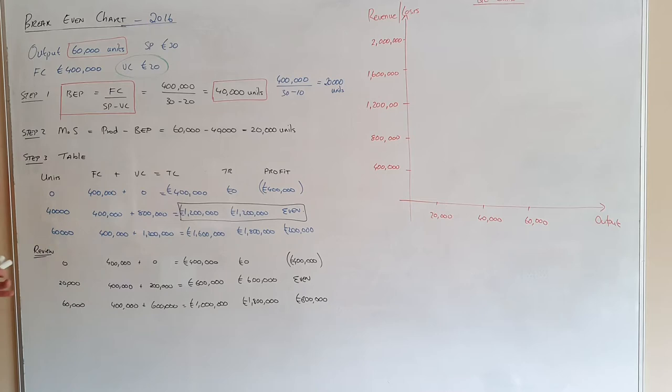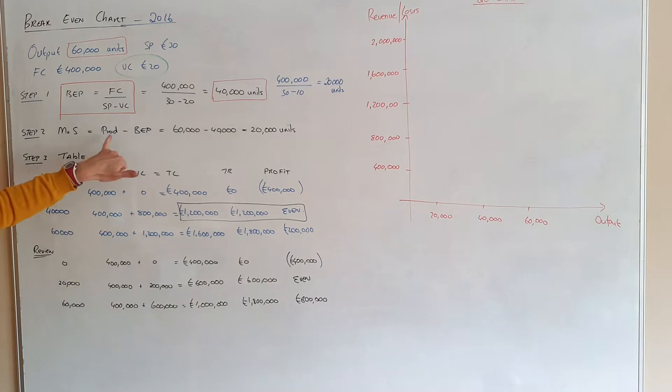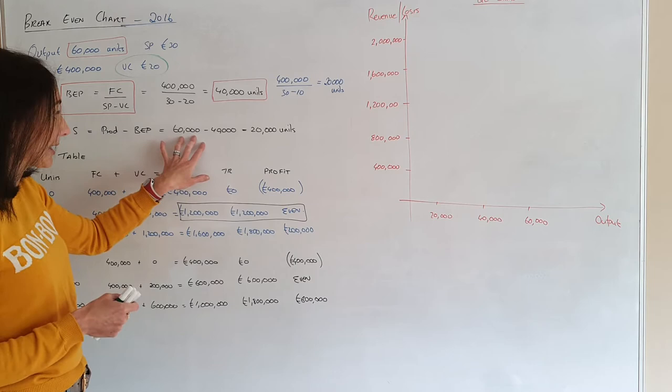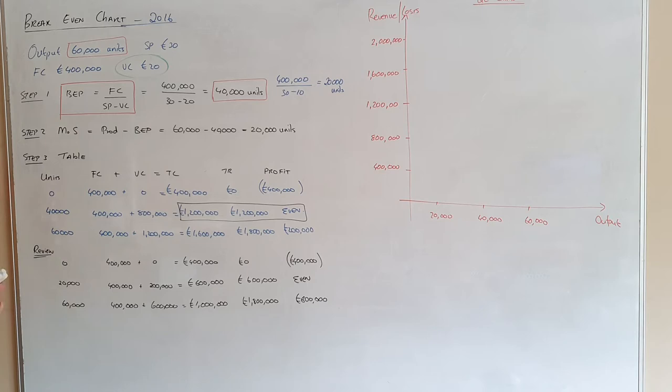Always calculate your margin of safety. You're not going to be asked to calculate this — you're going to be asked to show it on the diagram — but I want my students to calculate it just so they know where to go. The formula is production minus break-even point. Your current level of production is 60,000 and your break-even point is 40,000, so your margin of safety is 20,000 units.